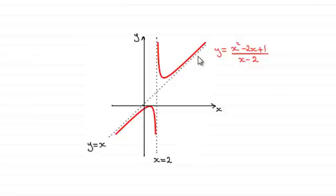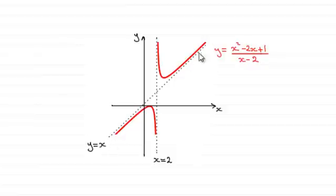Now not all graphs have asymptotes, but in this tutorial what I'm going to look at is some very simple ones — vertical ones and horizontal ones. Not these sloping ones; that's a little bit more advanced.